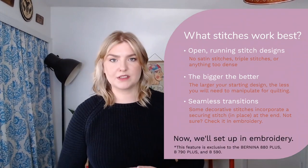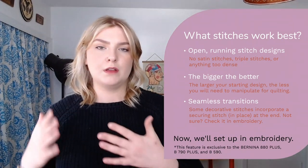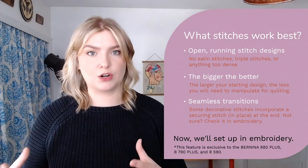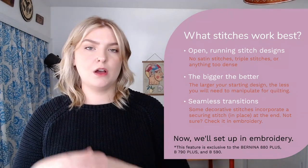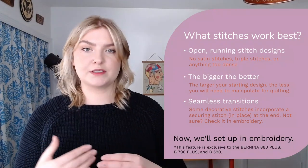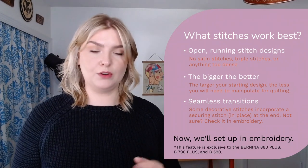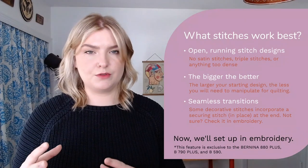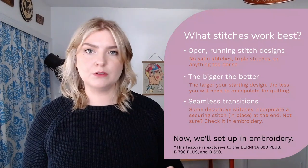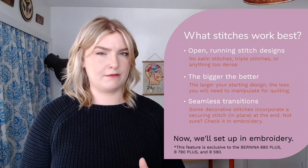Now we get to actually set up our stitch in embroidery. This feature is exclusive to the Bernina 880 Plus, the 790 Plus, and the B590. The sideways motion stitches — those larger than nine millimeter stitches — are only in the 880 Plus and 790 Plus. You can use stitches in embroidery on the 590, and there are plenty of instances where doing so is really cool and really helpful, but you won't be able to use those large sideways motion stitches. It's totally doable — it just may take a little bit more finessing.